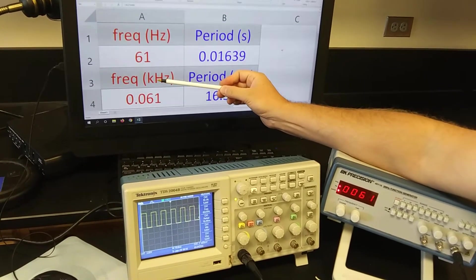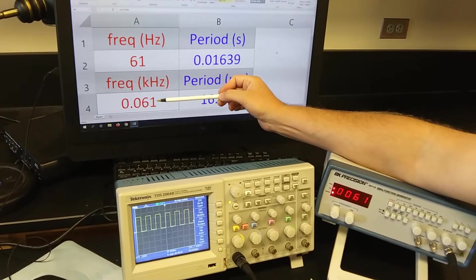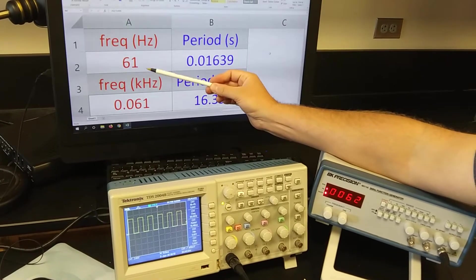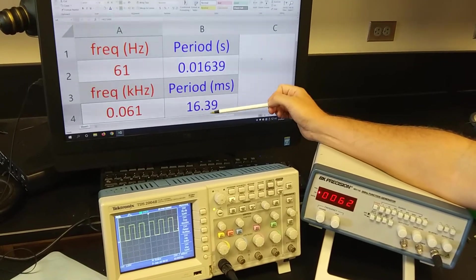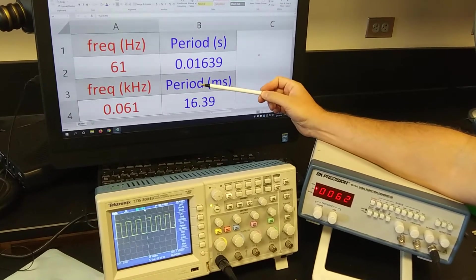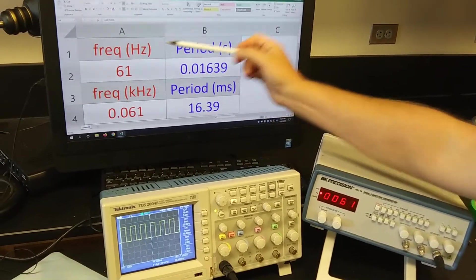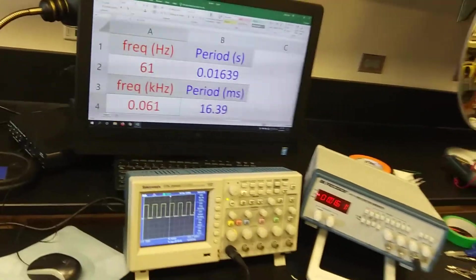So the period, I've just converted these into more common units. So later on we're going to be using kilohertz. So this is 0.61 kilohertz and the period is going to be in milliseconds, so about 16.4 milliseconds. So that's the period we have in this waveform and frequency in various units. Now let's go look at the board.